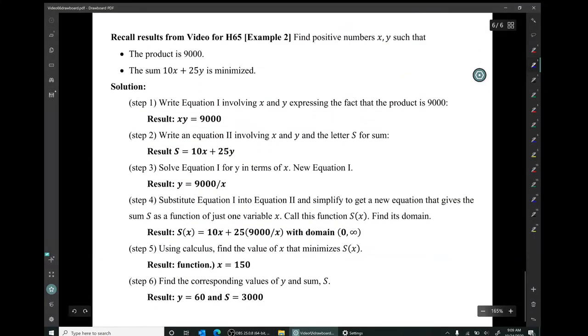In that example, we were asked to find positive numbers x and y such that the product had this known value, 9,000, and this particular sum is minimized. So we set up equation one, which was expressing the known value of the product, and equation two, expressing the sum, which has an unknown value.